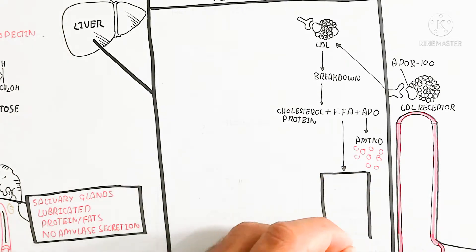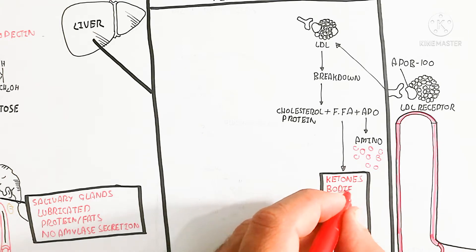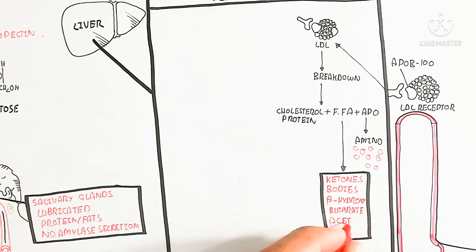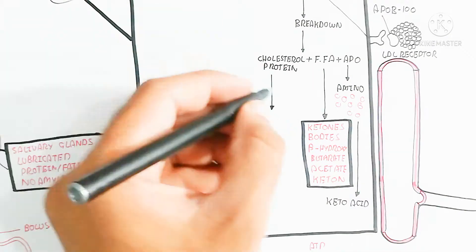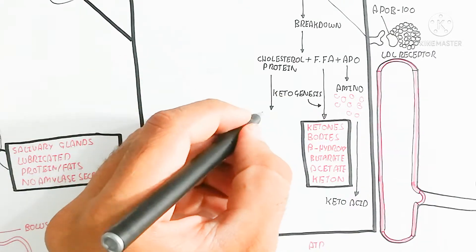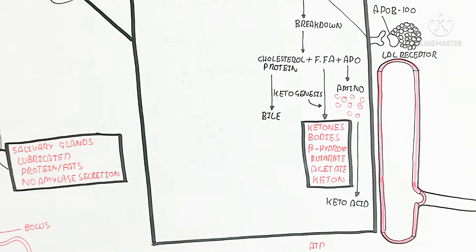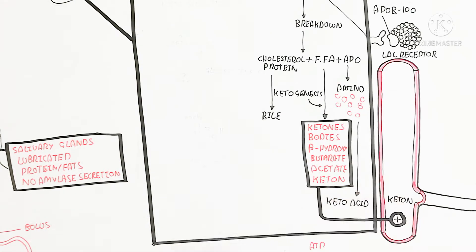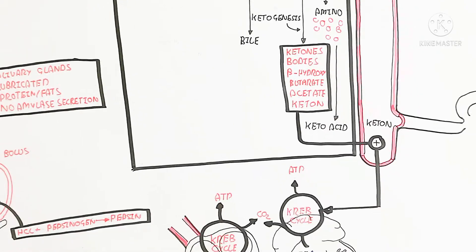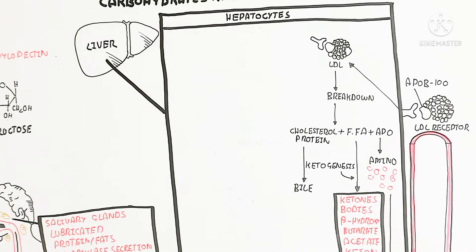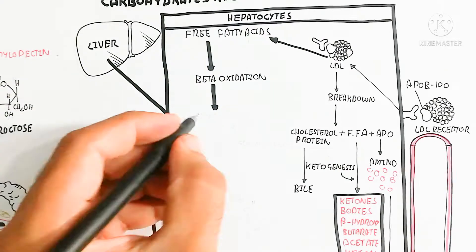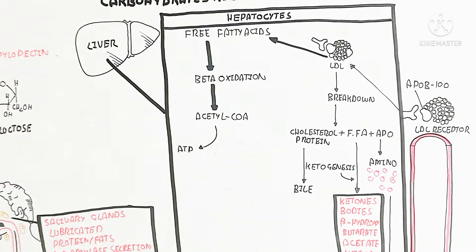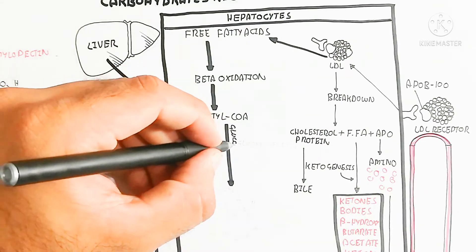Ketone bodies — including beta-hydroxybutyrate, acetoacetate, and glyceraldehyde — are produced, while amino acids also produce ketoacids. This is an alternate pathway for meeting sugar requirements, converting free fatty acids and amino acids into these forms. Excess cholesterol is excreted via bile. LDL is converted back to HDL for recirculation. Free fatty acids undergo beta-oxidation to produce acetyl-CoA, which also generates ATP. Gluconeogenesis produces glucose.